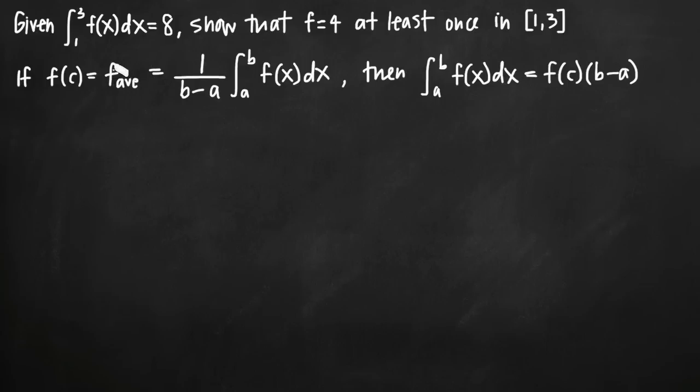You have the formula for the average value of the function. So f average, or the average value of the function on the range a to b, is given by 1 divided by b minus a times the integral from a to b of the function. This is the average value of the function here.